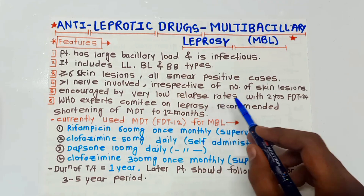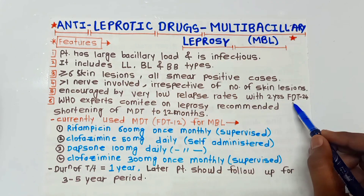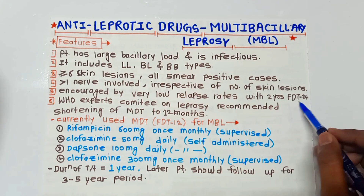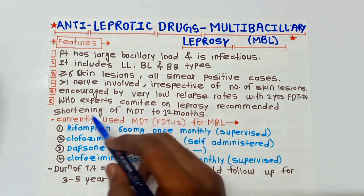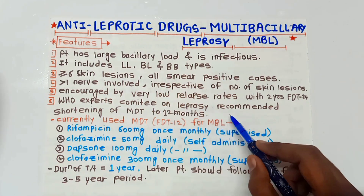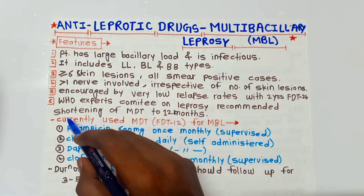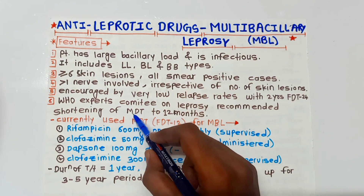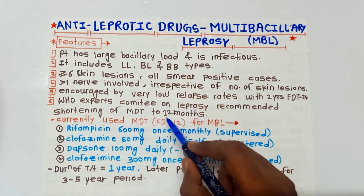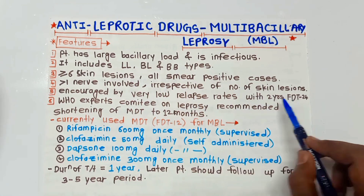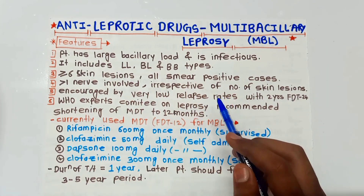Multi-bacillary leprosy is characterized by very low relapse rates with two years of MDT — MDT 24 months, meaning 24 months or two years of treatment. The WHO Expert Committee on Leprosy recommended shortening the MDT to 12 months. MDT means multi-drug treatment, and they have shortened the treatment period from two years to 12 months, or one year.